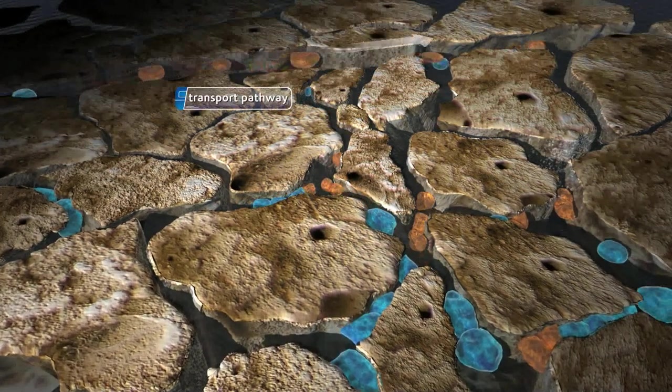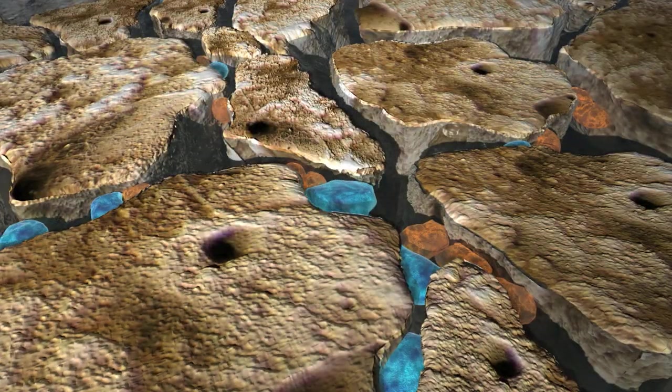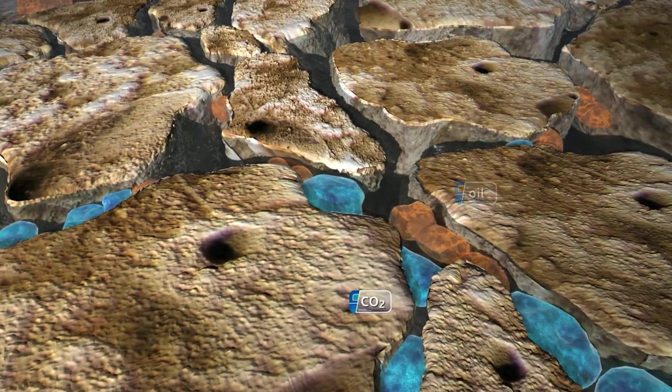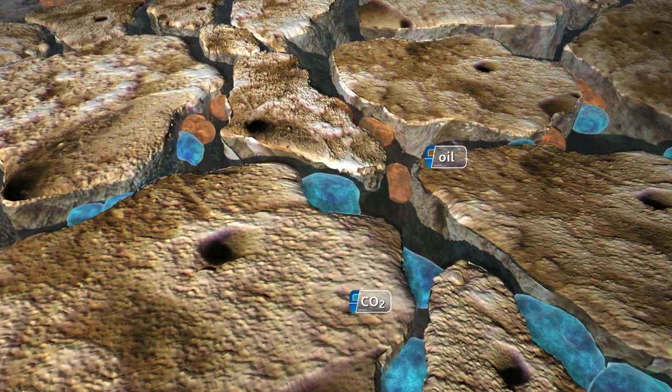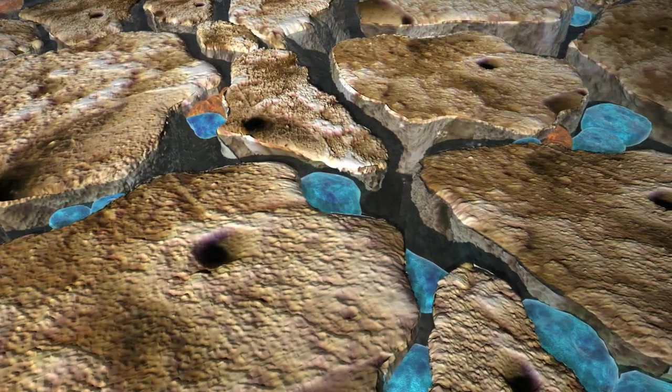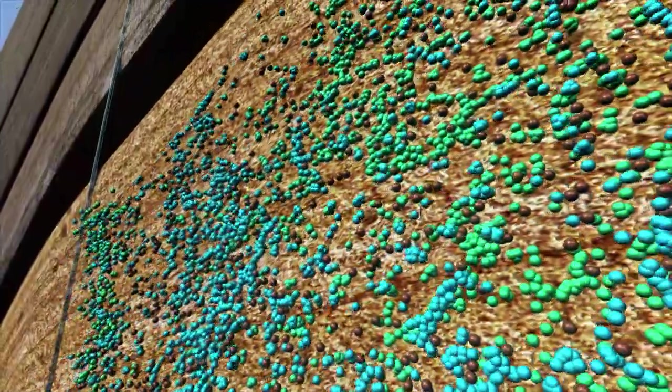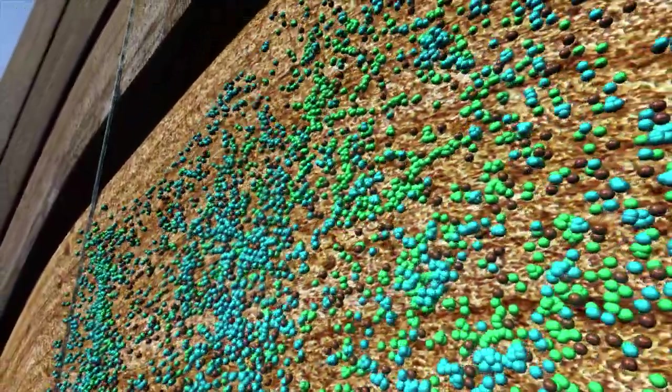As the CO2 mixes with the oil in the formation, the oil swells and its viscosity reduces, allowing the oil to flow more easily through the interconnected pore spaces towards the production well, which can result in 10 to 30% more oil production. This oil would not be able to be produced without a solvent agent such as CO2.